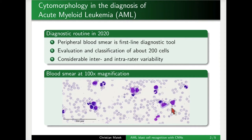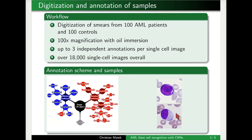The aim of this project was to assist this very laborious and tedious step using deep learning methods. We did this by compiling a large-scale database of different morphological classes of single cell images, obtained by scanning the peripheral blood smears of 100 AML patients and 100 control patients at high resolution with oil immersion.